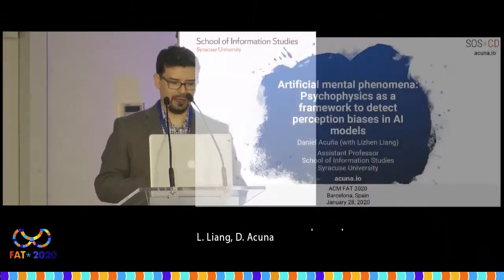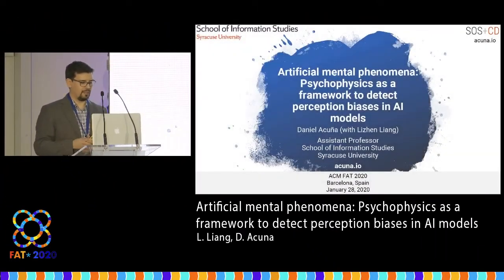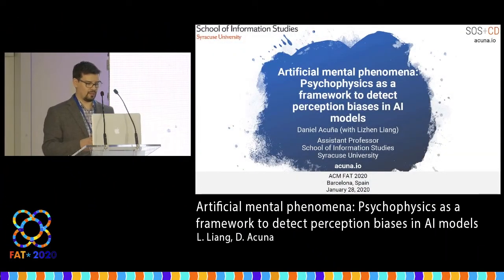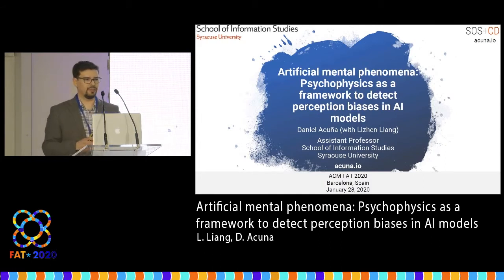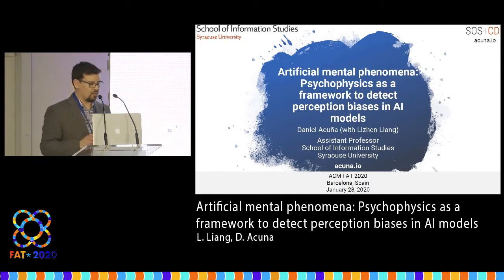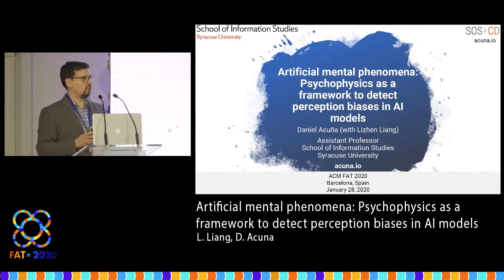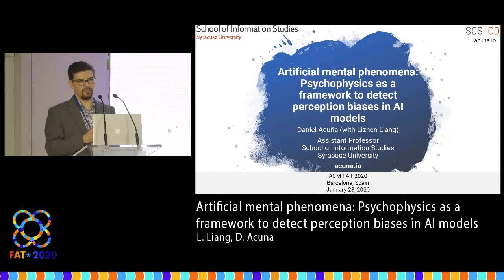My name is Daniel Acuña, I'm from Syracuse University, and this work was done with a PhD student who couldn't come unfortunately. The idea of this work is to try to take ideas from experimental psychology and adapt them to measuring perception biases in AI.